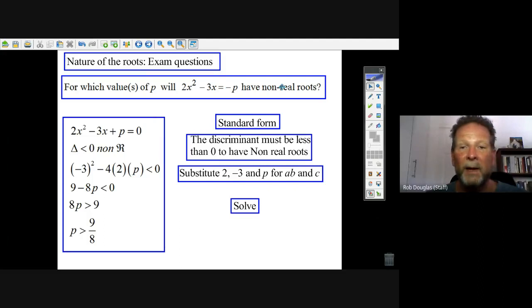Well, if they say non-real roots, that b squared minus 4ac, the discriminant, must be less than zero, must be negative. So that's the inequality we've got to build. a is 2, b is minus 3, and c, your constant, is this p.